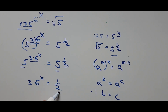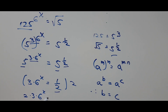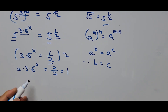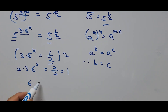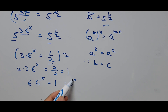To get rid of the denominator of 2, we multiply the whole equation by 2. So this becomes 2 times 3 times 6 to the power of x equals 2 over 2, which equals 1. Simplifying: 2 times 3 is 6, so 6 times 6 to the power of x equals 1. And 1 can be written as 6 to the power of 0, since any number raised to 0 is 1.